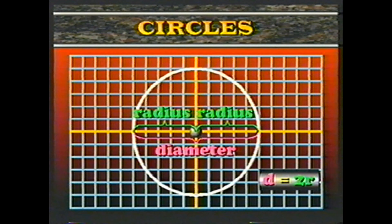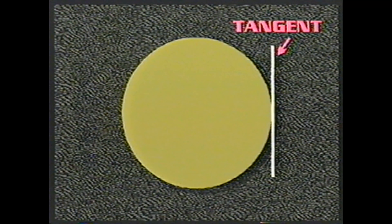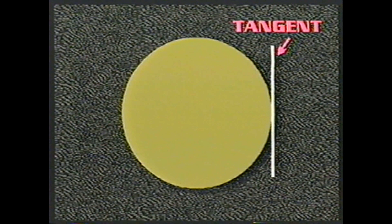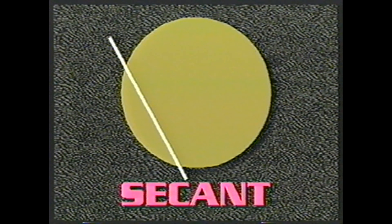There are several other lines that are associated with circles that you should know. A chord is any line segment between two points on the circle. If the chord passes through the center of the circle, then that chord is a diameter. Every diameter is automatically a chord. A diameter is the longest possible chord. Some chords are diameters, but some chords are not diameters.